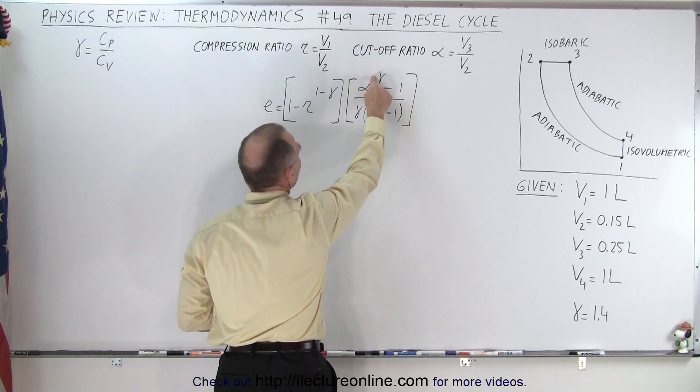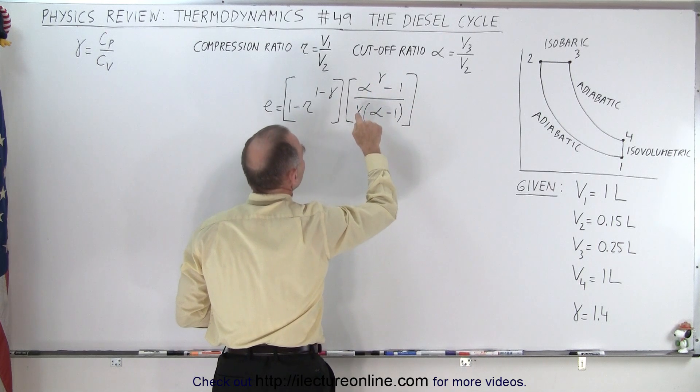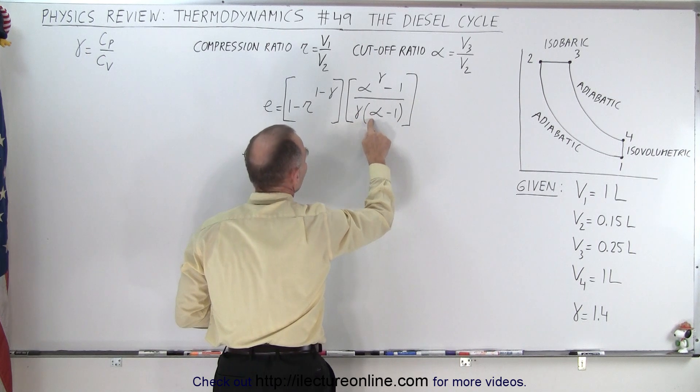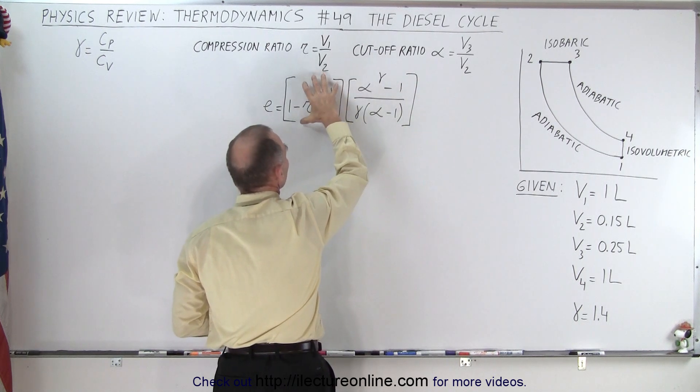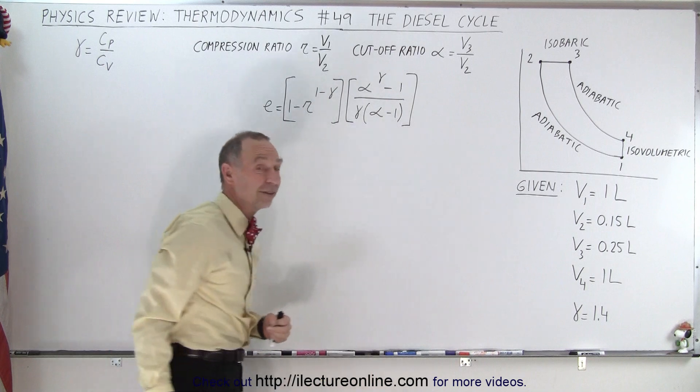...the cutoff ratio to the gamma power minus one, divided by gamma times the cutoff ratio minus one. That then gets multiplied to get the efficiency of a diesel engine.